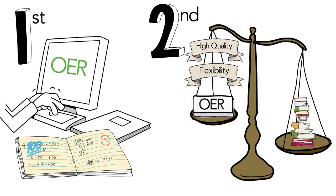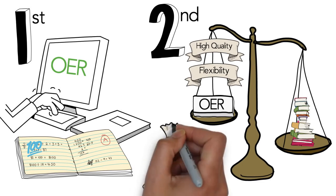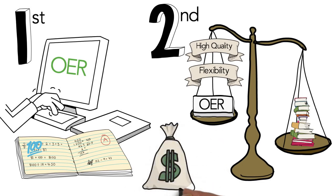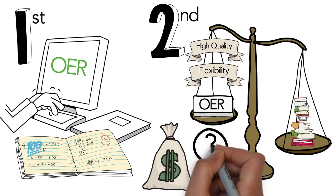These findings should lead us to question the value of traditional textbooks. As Dr. Hilton asks, if the average college student spends so much money on textbooks and yet performs no better than the student who uses free OER, what exactly is being purchased with all that money?